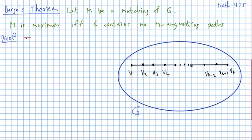Let's start with the forward direction. Assume that g has an augmenting path, a path like this, v1 up to vk.